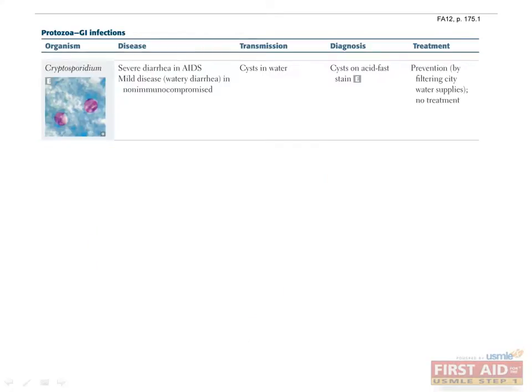Cryptosporidium is a protozoan causing watery diarrhea, transmitted by cysts in fecally contaminated water supplies. In immunocompromised hosts such as AIDS patients, this diarrhea can be very severe, often leading to unrelenting and life-threatening diarrhea. In immunocompetent hosts, the diarrhea is self-limited and mild. There is no treatment for this infection, so filter treatment of water sources is important in preventing it.